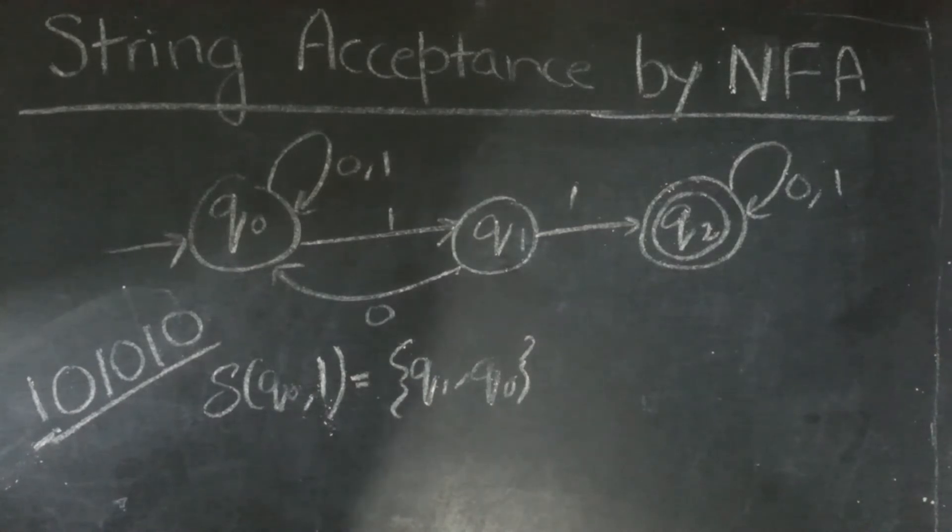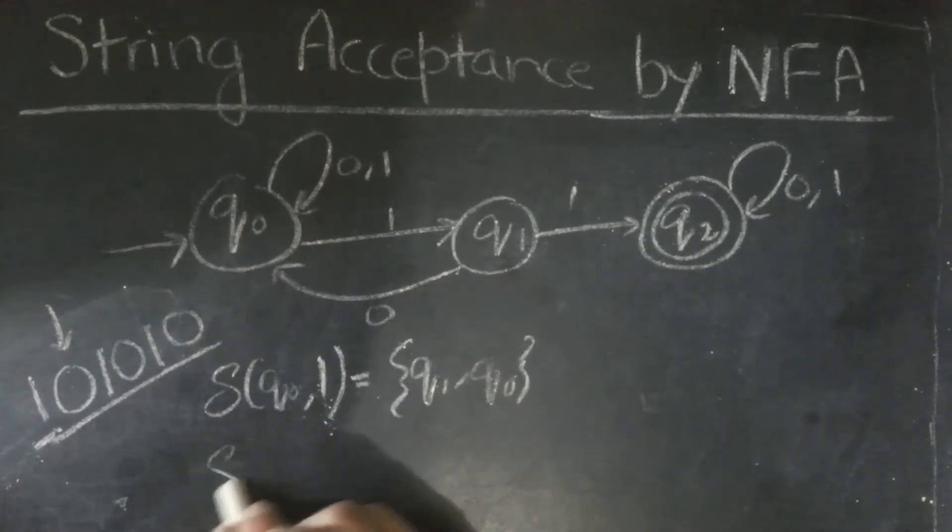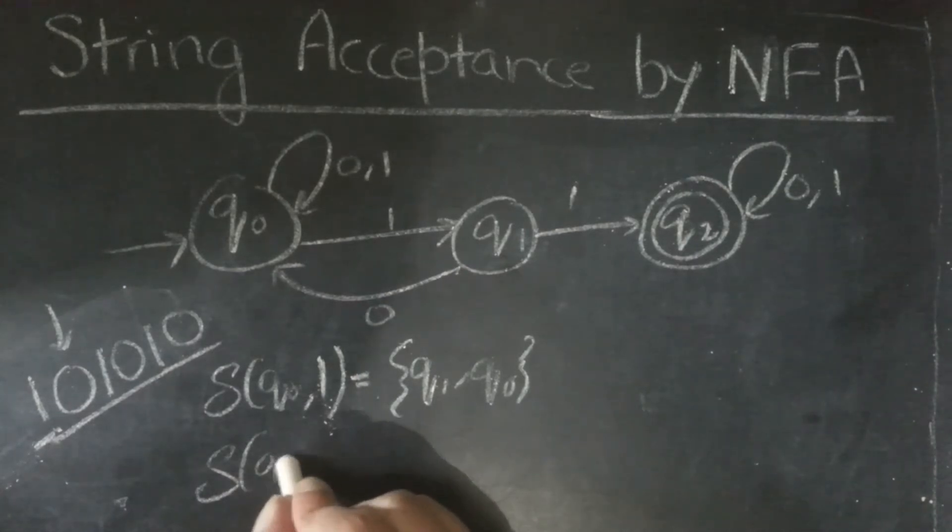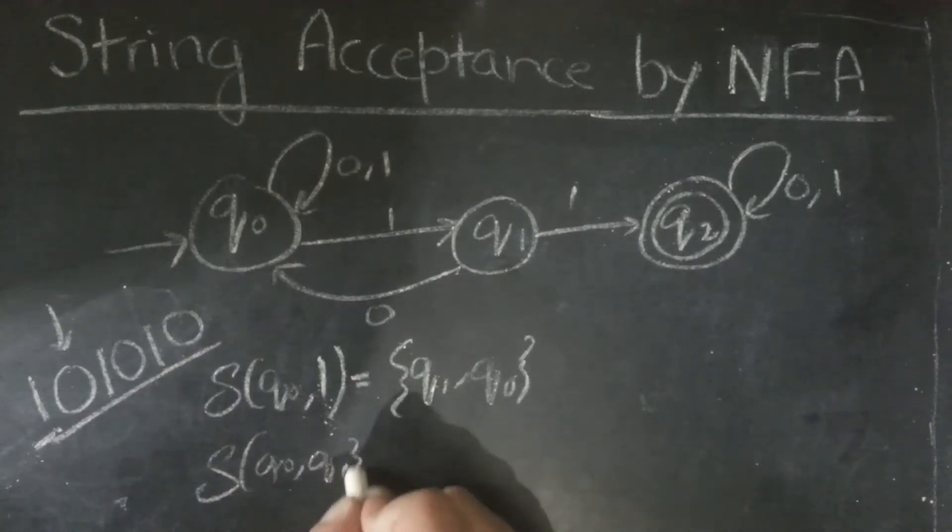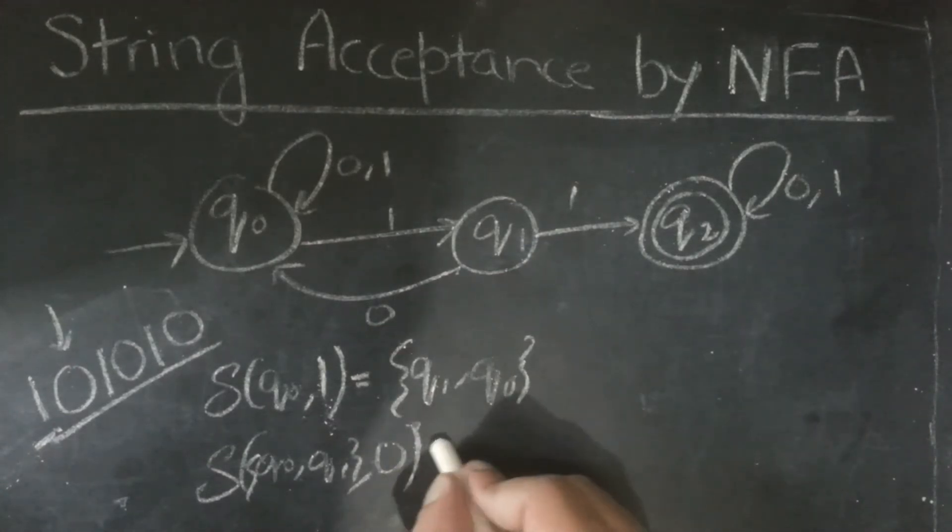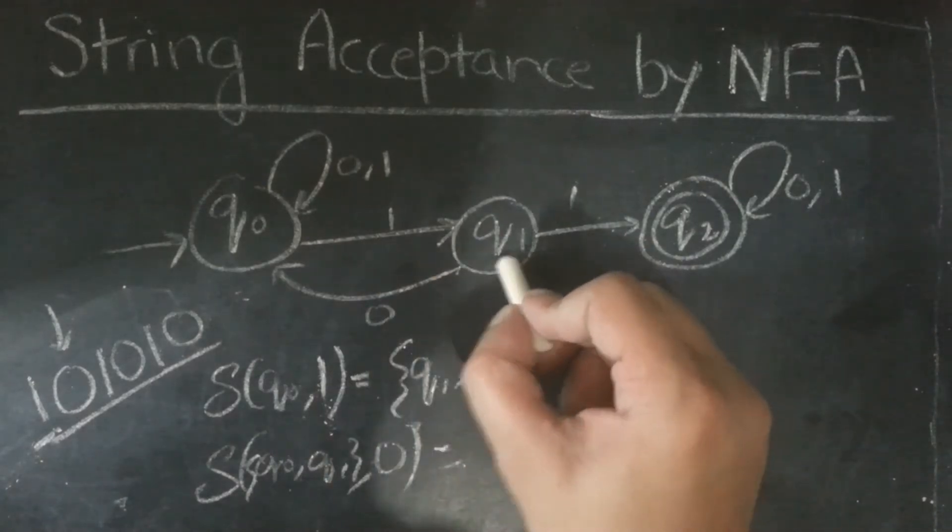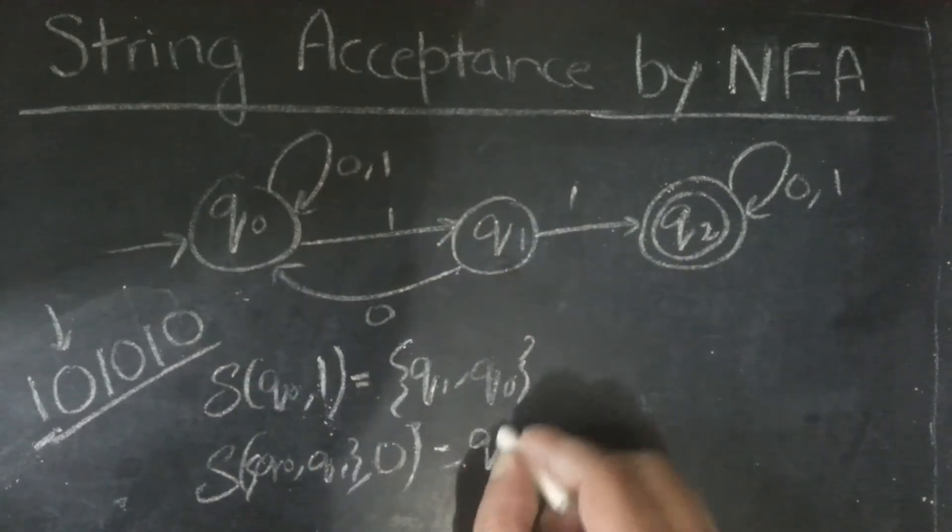So, set of q0 and q1. Next, we will go to 0. Now, on the set of q0 and q1 we will give 0. Now, on q0, 0 will take us to q0 and q1, 0 will take us to q0. So, we will go to q0.